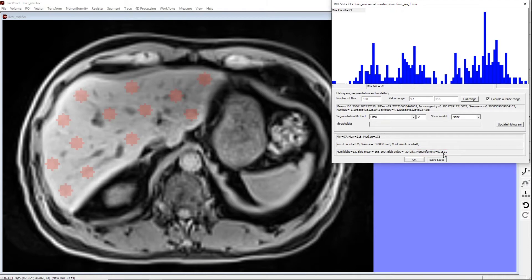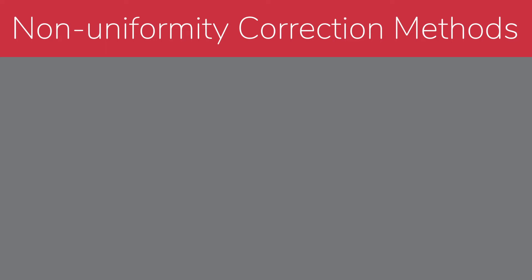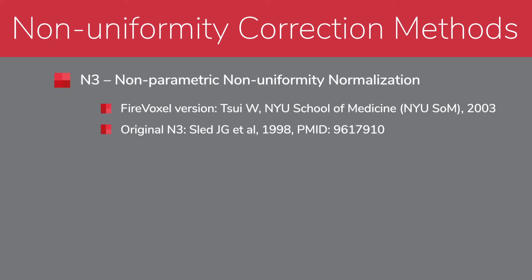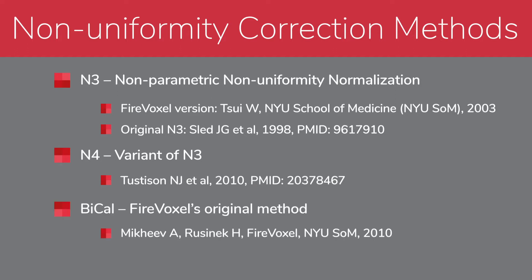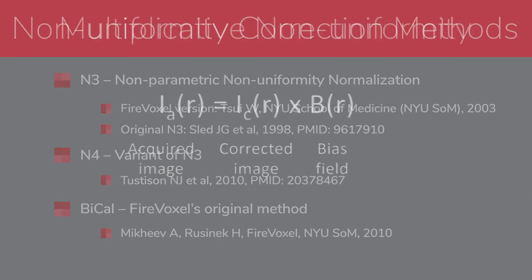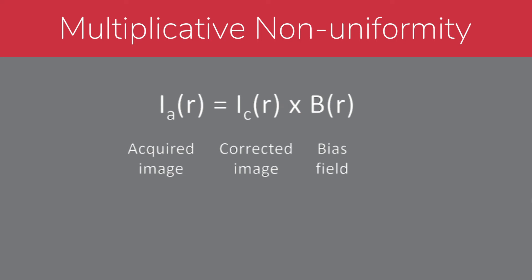The non-uniformity correction is expected to reduce the visual signal intensity variation, transform the histogram into a single narrower peak, and reduce the non-uniformity measure. FireVoxel offers three methods for non-uniformity correction: the widely used N3 method and its variant N4, as well as FireVoxel's original method named Baikal. These methods are retrospective and estimate the non-uniformities directly without the need for additional acquisitions. These methods assume that non-uniformity is multiplicative, meaning the intensity of the acquired image at every point can be represented as a product of the corrected intensity and a spatially varying bias field.